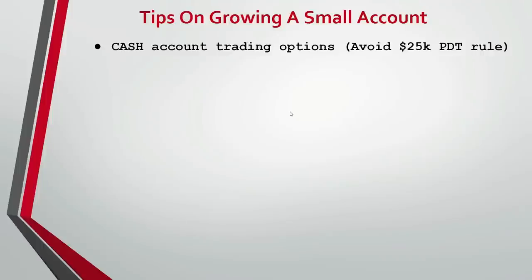If we have a small account, specifically under $25,000, we are going to be subject to the pattern day trader rule. In this rule, we're only going to be able to make three day trades in a five-day period. However, to avoid this, I recommend — especially if you trade options — to switch to a cash account. With a cash account, we can make an unlimited amount of day trades in a single day without being subject to the PDT rule. This is only using a cash account, specifically trading options.